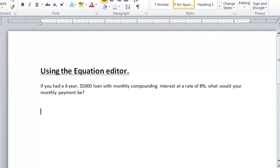Okay, so the problem says if you had a six year $5,000 loan with monthly compounding interest at a rate of 8%, what would your monthly payment be?